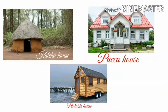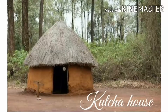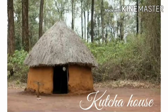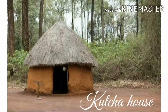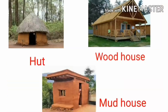There are three kinds of houses: kachcha, pakka, and portable. Kachcha house is also called a temporary house because it is made of less quality materials such as wood, mud, straw, and so on. For example: hut, wood house, mud house, and so on.